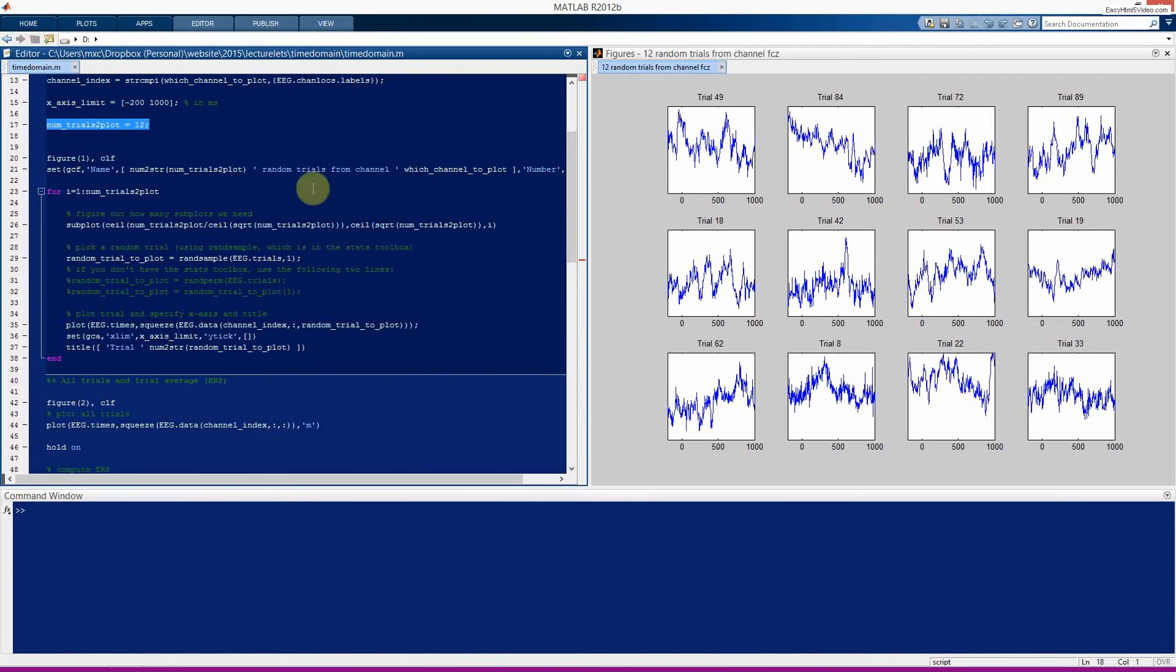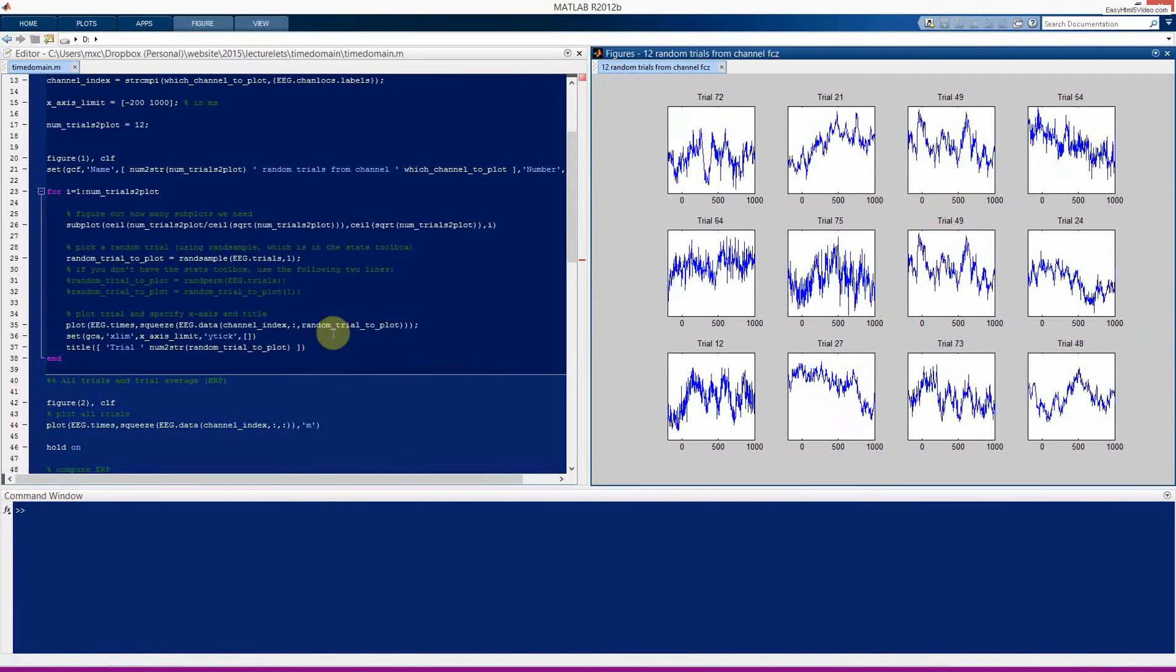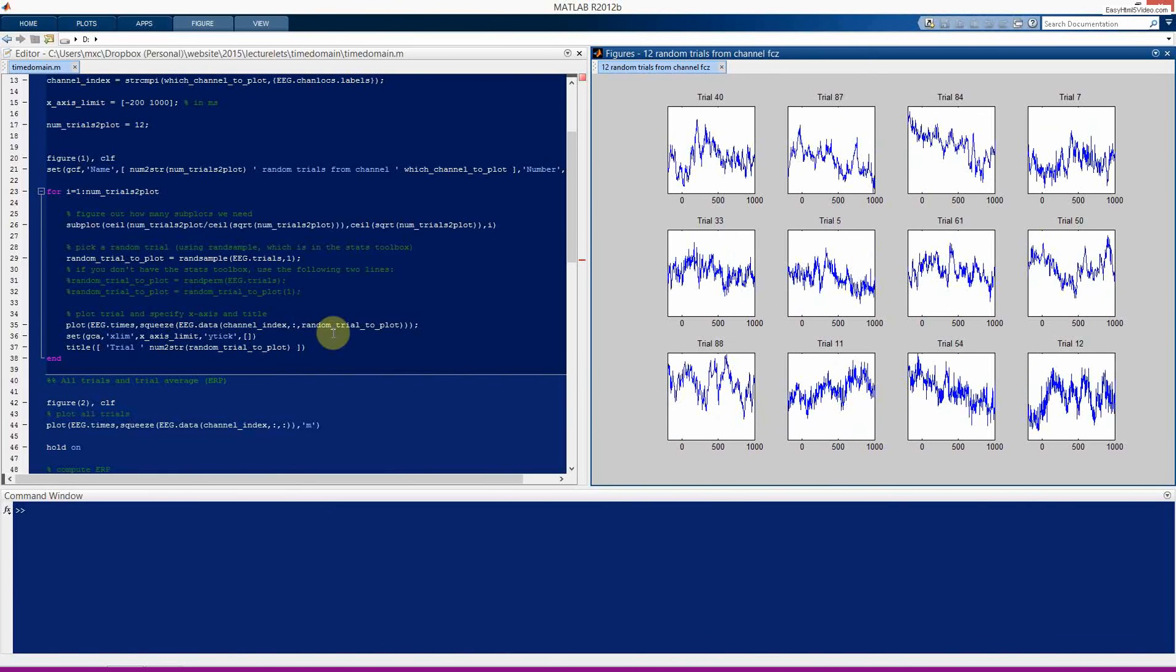Here we define a number of trials to plot. I just arbitrarily pick 12, you can also try changing this to some other number. Then this loop, you can run through it line by line and try and understand every piece of the code if you like. But it essentially just defines the layout of these multiple subplots, picks a random trial to plot, and then plots the data. So this is perhaps the most important line here. We are plotting the EEG.times, it's the vector of time points in milliseconds. And here we are plotting the EEG.data from this channel, all time points, and this random trial to plot. And it really is random. So you can try running this code over and over again, and you'll get different trials coming up each time.